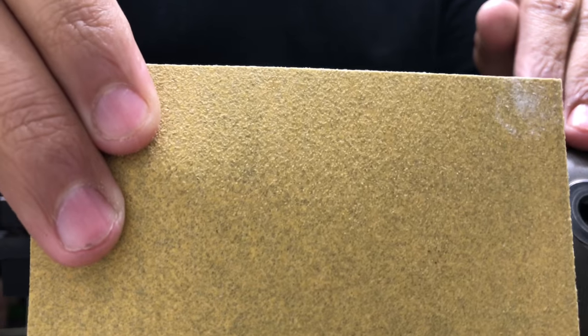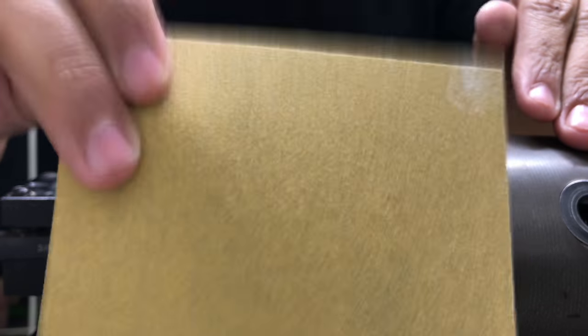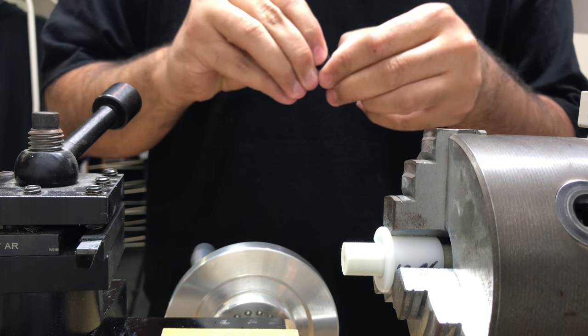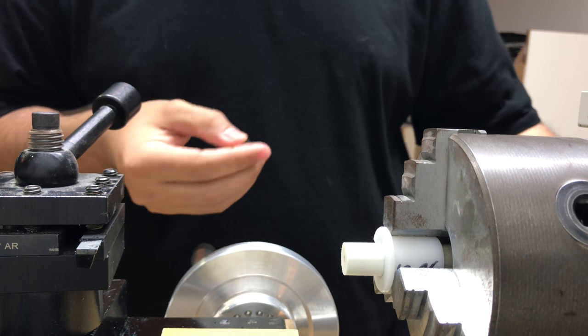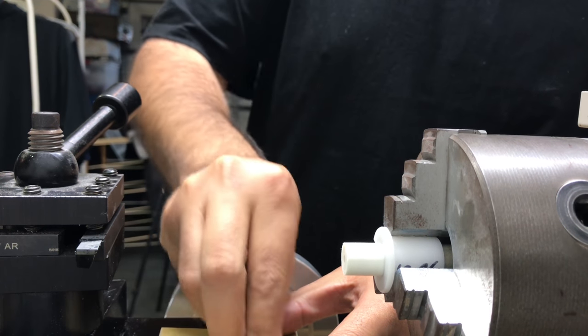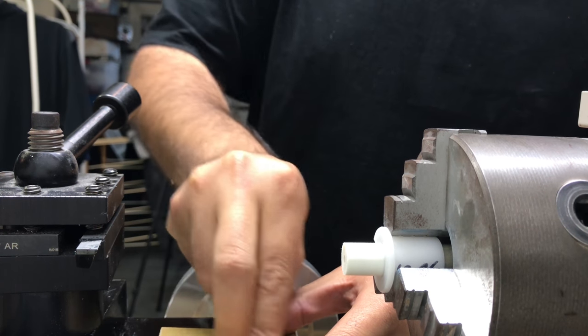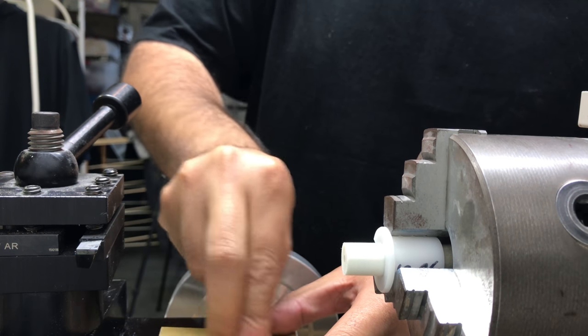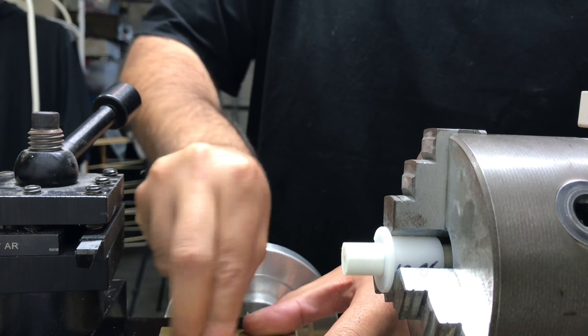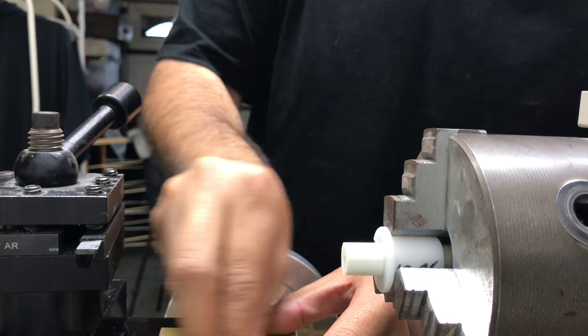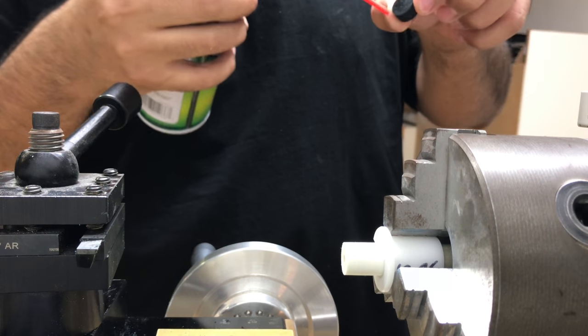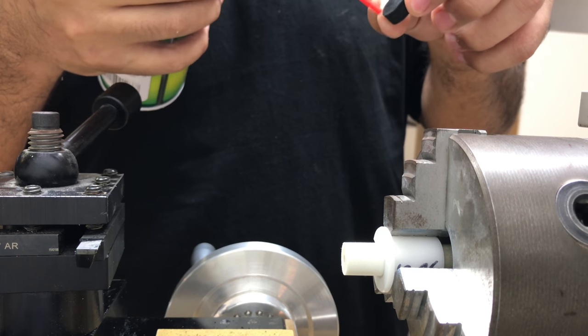Now with the same 120 grit sandpaper, I'm gonna scuff the glue side of the tip, and I like to go in a circular motion, applying even pressure to all sides. People ask why 120 grit? Because I find that it's the best grit for maximum adhesion on leather. I'm gonna blow off the tip, open up the pores. As you can see, that's a very scuffed surface.